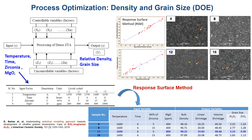We optimized the composition and process parameters through Design of Experiment (DOE), specifically using the Response Surface Method (RSM). With four input factors and five variables, it would have mandated 5^4 = 625 experiments — an impossible task. By adapting RSM, we successfully optimized the composition and process parameters to obtain the lowest grain size and highest density of zirconia toughened alumina-based refractory. Thank you for your patience.